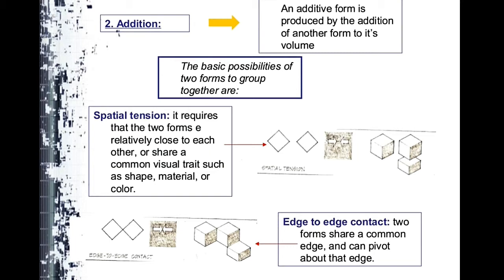The additive method is the most beautiful — it grows and groups forms together like mushrooms. In additive form, another form is added to the volume. For example, you can add a half circle or dome to a square — like placing a dome atop a rectangular building, as seen in Washington DC. There are four possibilities for grouping forms together.